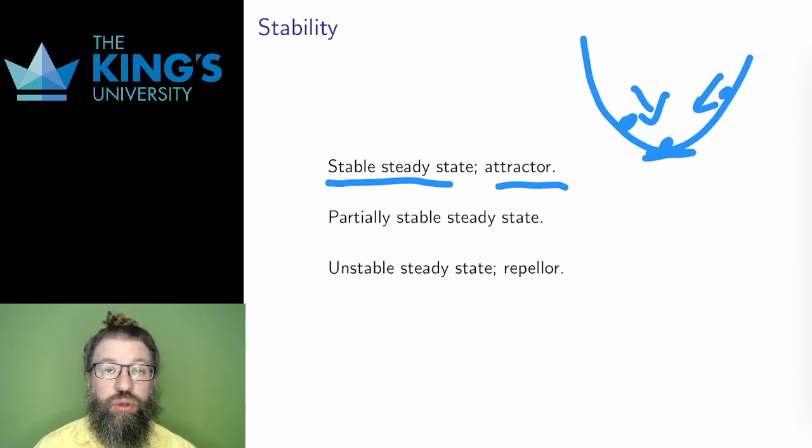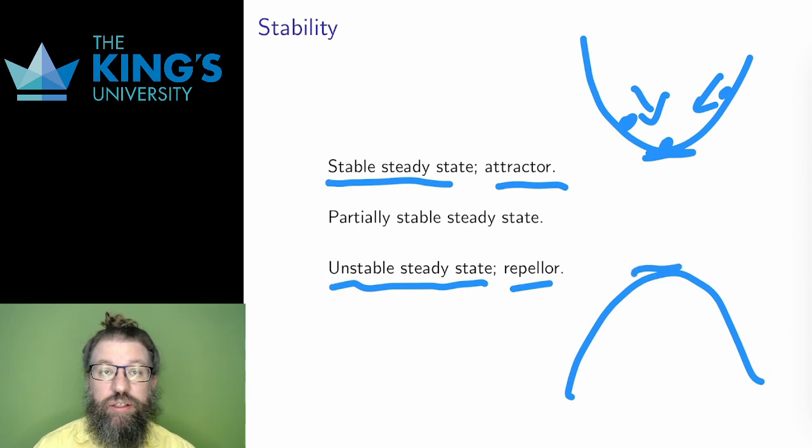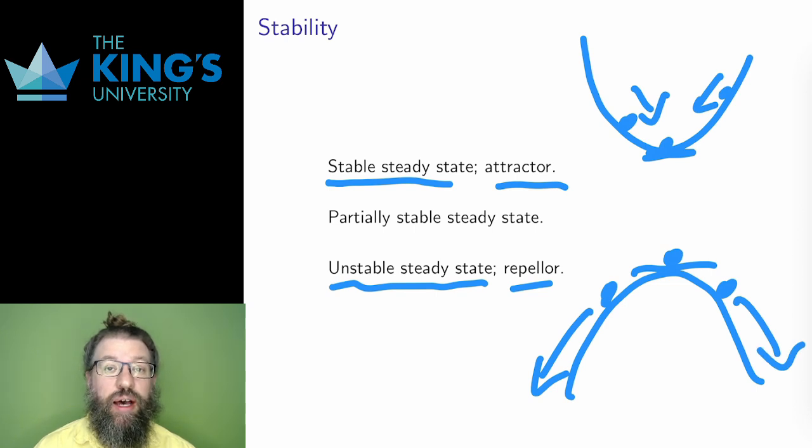Second, it might be true that the system starts just a little bit away from capital P, then the long-term behavior is to diverge away from the steady state. This is called an unstable steady state, or a repeller. The mental image here can be the top of the hill. Exactly at the top, the hill is flat, and a ball can balance perfectly. However, any little movement away and the ball will roll away from the top of the hill. The system wants to get away from the steady state. It is unstable.